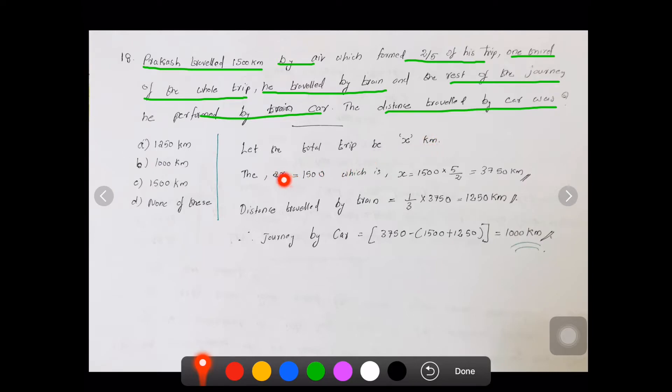We know that 2/5 of x travelled by air, so 2/5 x is equal to 1500. From that, the total distance x we can calculate: 1500 into 5/2, so it will be 3750 km. So we got the total distance.